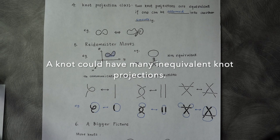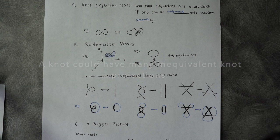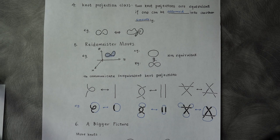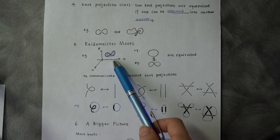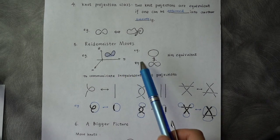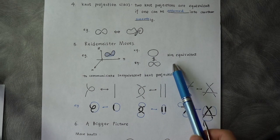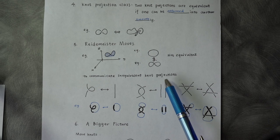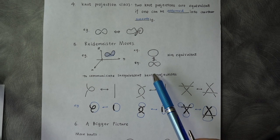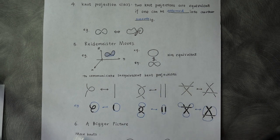For one knot class, it could have many inequivalent knot projections. For example, imagine we have this chip here, and we project it onto XY and ZY plane. Those two projections are inequivalent, because we have a crossing here, which is not a smooth deformation.